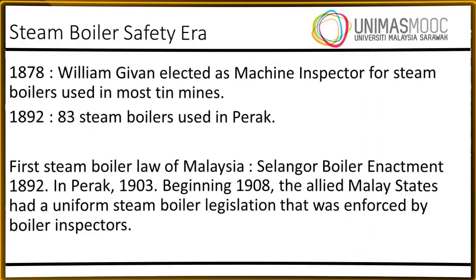In the steam boiler safety era before 1914, in the year 1878, William Given was elected as machine inspector to inspect the steam boilers used in most steam mines. In the 1890s, the Perak state government elected personnel with expertise in steam boilers and gave them each a license as a boiler surveyor. In 1892, there were 83 steam boilers used in Perak. Steam boiler enactments were state-oriented, as each of the four allied Malay states — Perak, Selangor, Pahang, and Negeri Sembilan — used different steam boiler laws. The first steam boiler law of Malaysia is believed to have been legislated in Selangor, the Selangor Boiler Enactment 1892. In Perak, the first steam boiler law was enforced in 1903. Beginning in 1908, the allied Malay states had a uniform steam boiler legislation enforced by boiler inspectors.